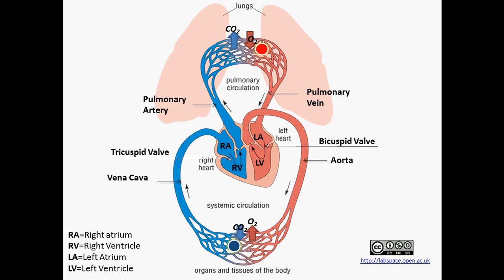We are going to describe the flow of blood through these two circulations. We are going to start from blood that is returning from the systemic circulation. Let's choose a specific tissue like the tissues of the brain. The point that we are starting at is where the brain has actually picked up the oxygen that it needs and has given back its waste product, which is carbon dioxide. So the blood that is leaving the brain is filled with carbon dioxide.